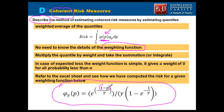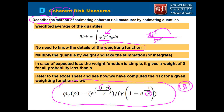The formula is 1 minus P, where P is the cumulative probability divided by gamma, divided by 1 minus e to the power (1 minus gamma). Gamma is your confidence level threshold — for example, 5% or 1% — depending on what level you have taken. So if you are estimating at 5% expected loss, gamma will be 5%; if at 1%, gamma will be 1%.